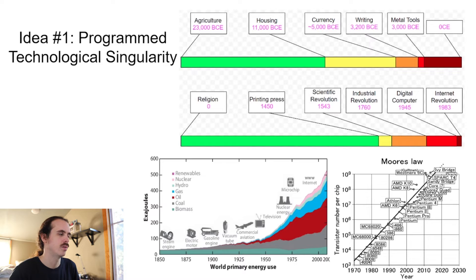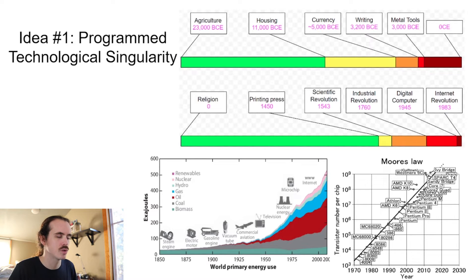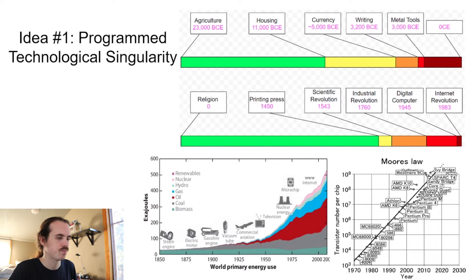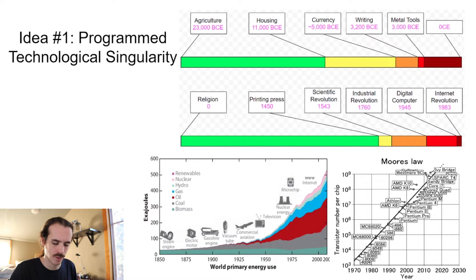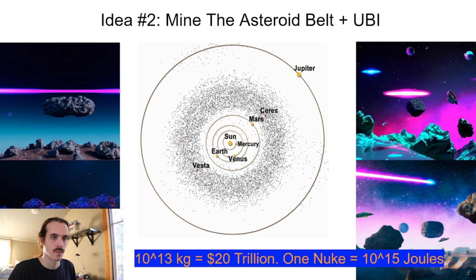That would be the final milestone, and this programmed technological singularity would be super smart - able to solve science, climate change, and everything else for us. Now I'm going to talk about a method to create such a program later, but first let's go to idea number two.